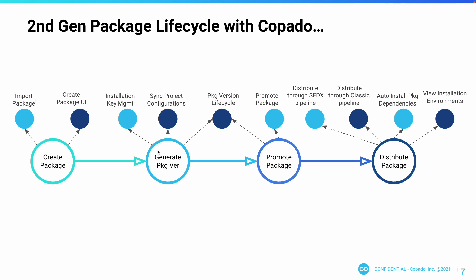With Copado, you can generate new package versions. You can pass any installation keys. You can synchronize the project configuration, as well as manage the package version lifecycle. You can create a package in a beta version, and when you think it's time to promote it, mark it as released so that you can install it into the production orgs. You can promote a package from the Copado user interface as well.